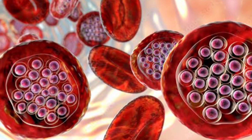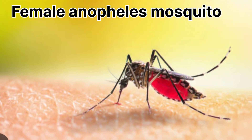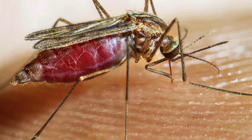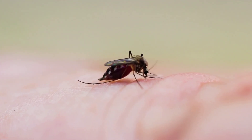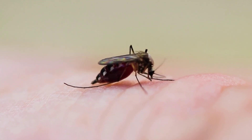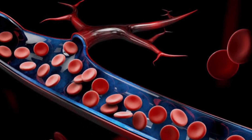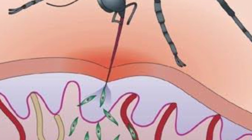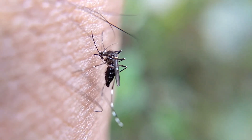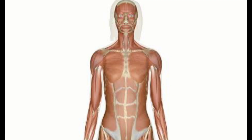The actual causative agent of malaria is the protozoa called Plasmodium, which causes malaria in humans. Plasmodium lives as a parasite in the female Anopheles mosquito. From there, it gets transmitted to humans via a mosquito bite. When an infected mosquito bites a human, it transfers the parasite into the bloodstream as sporozoites — a stage in the life cycle of Plasmodium capable of causing infection.